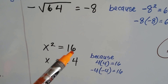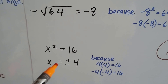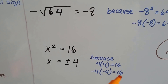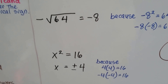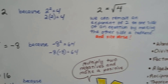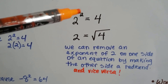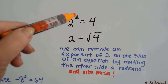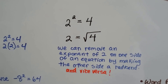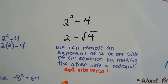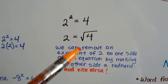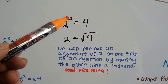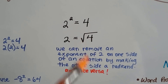When you see x squared equals 16, we can say x is equal to positive or negative 4, because either way, positive or negative, it's going to equal 16 — we get two answers. And if you have 2 squared equals 4 and you need to remove the exponent, you can just take it away and put a radical symbol around the 4. It works vice versa too: if you have a radical symbol around a 4 and you want to get rid of it, you can put a little square on that side of the equation.